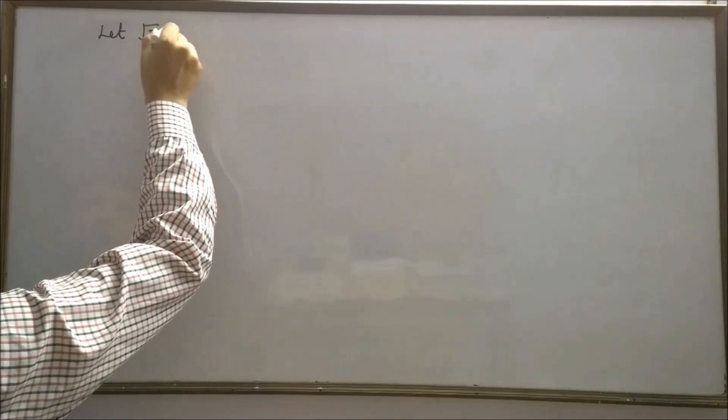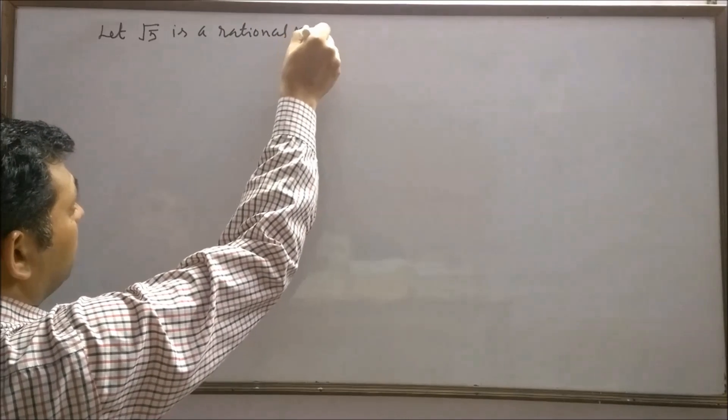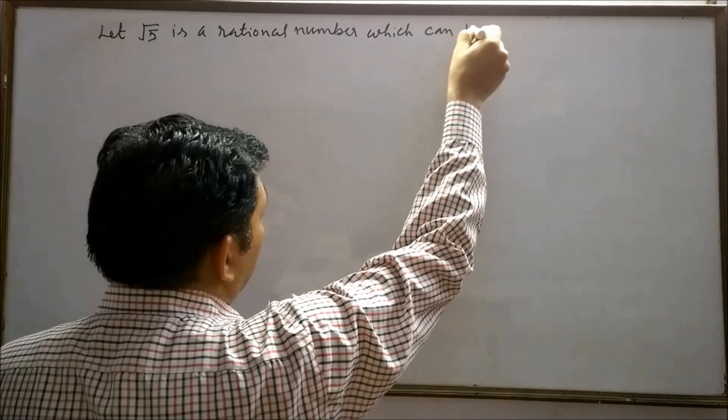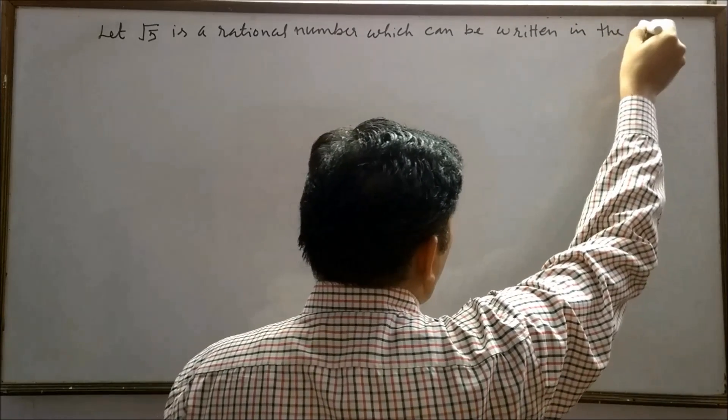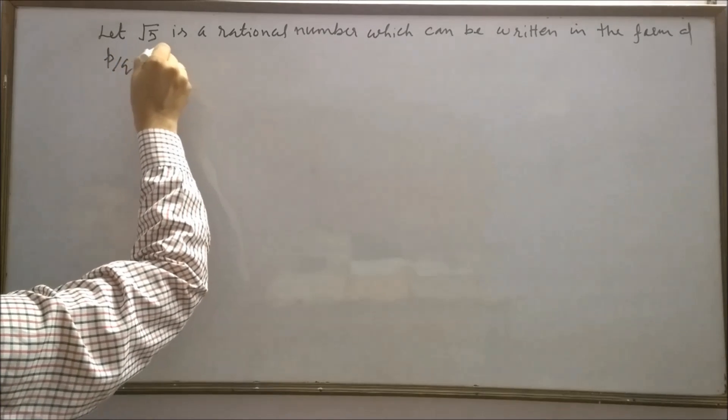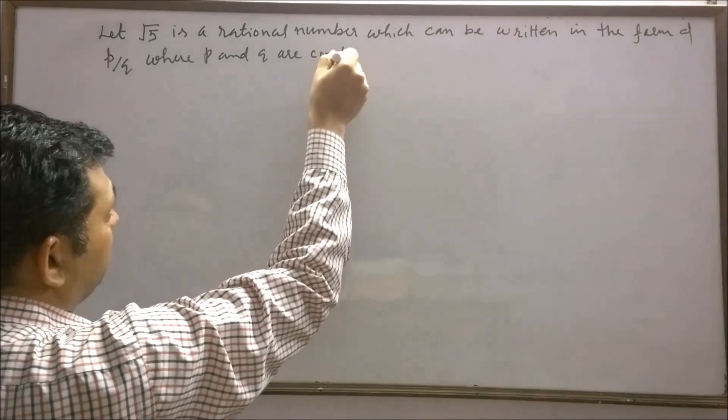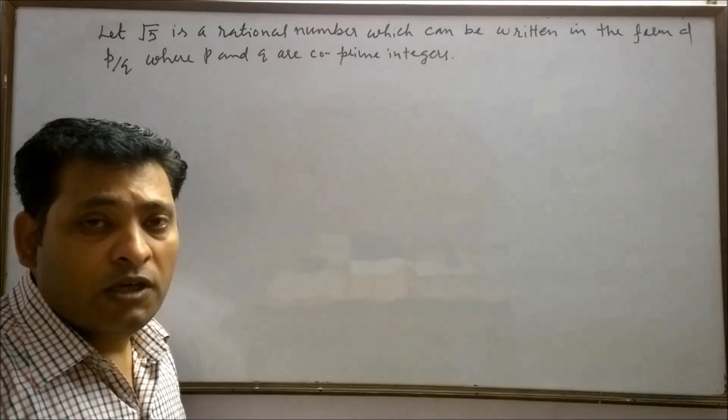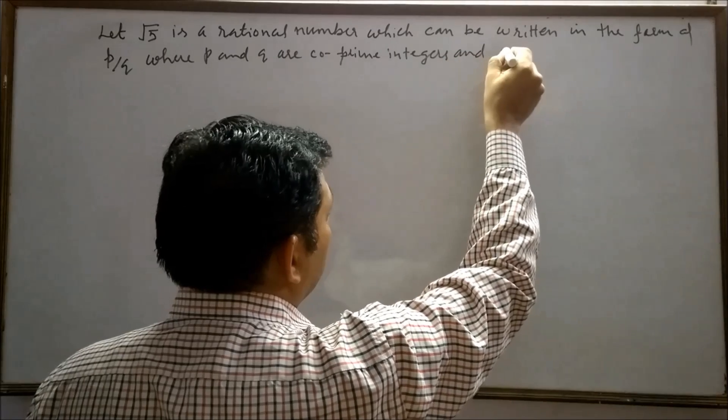Let root 5 is a rational number which can be written in the form of p upon q, where p and q are co-prime integers. Co-prime integers are those integers which do not have common factor other than 1, and q is not equal to 0.